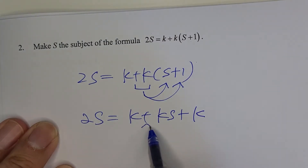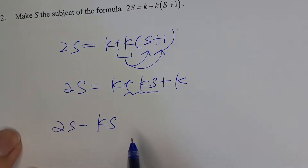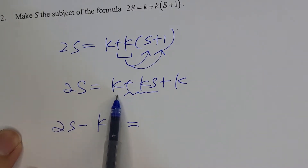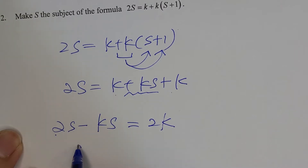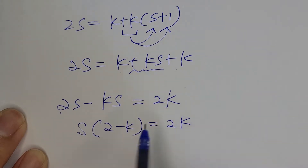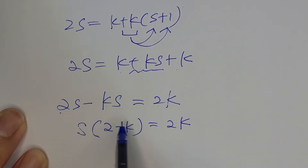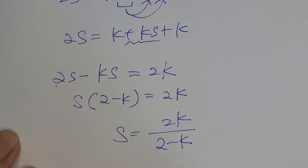Move the ks term to the other side so it becomes negative ks. Then simplify k plus k to get 2k. Take out the common factor s on the left-hand side: s bracket (2 minus k) equals 2k. Divide both sides by (2 minus k), so the final answer is s equals 2k over (2 minus k).